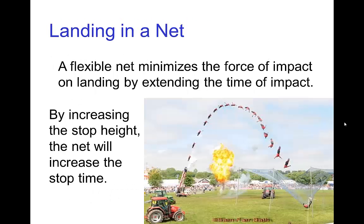For an extreme jump like the human cannonball landing in a net, we need a much longer stop height — and that's what the net accomplishes. The net minimizes the force of impact on landing by extending the time of impact, which is the stop time, and this is done by increasing the stop height. The net is flexible, so the performer travels a significant distance before being fully brought to a stop.